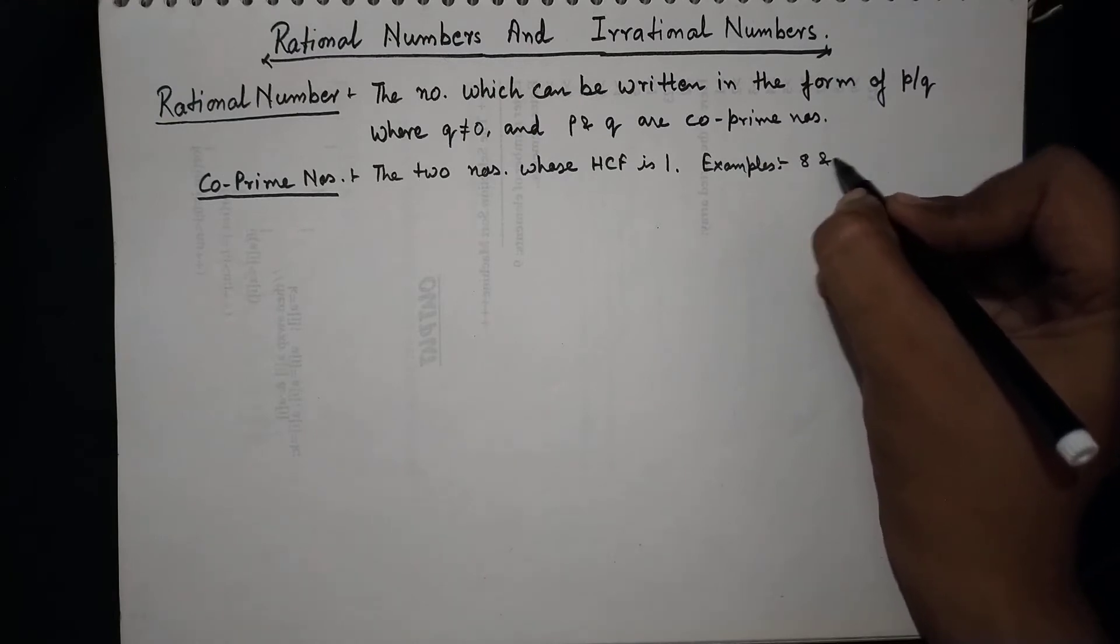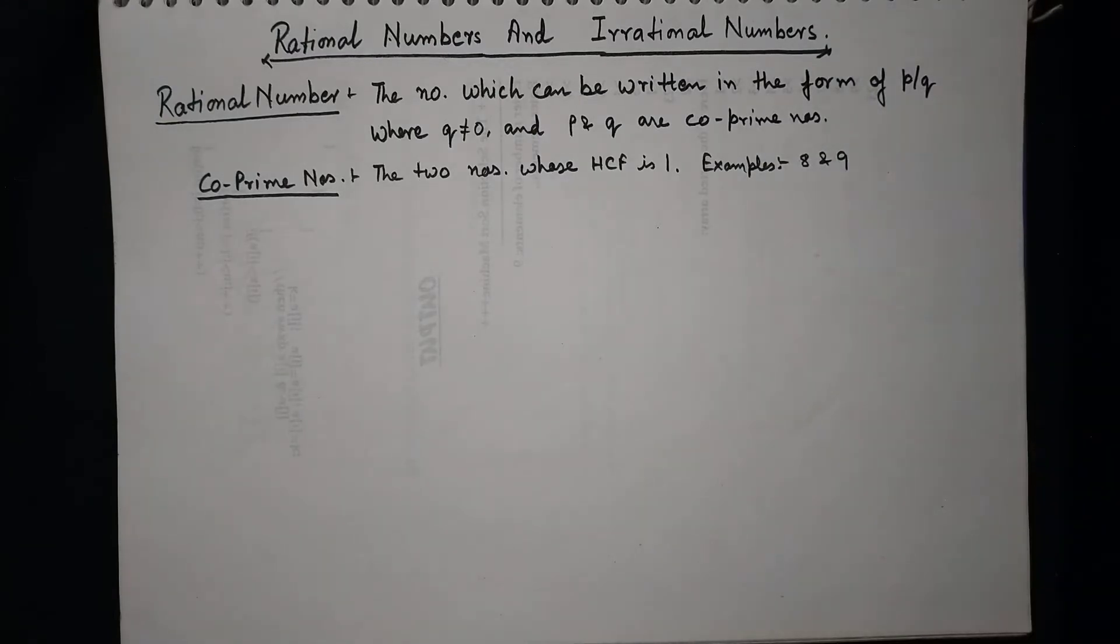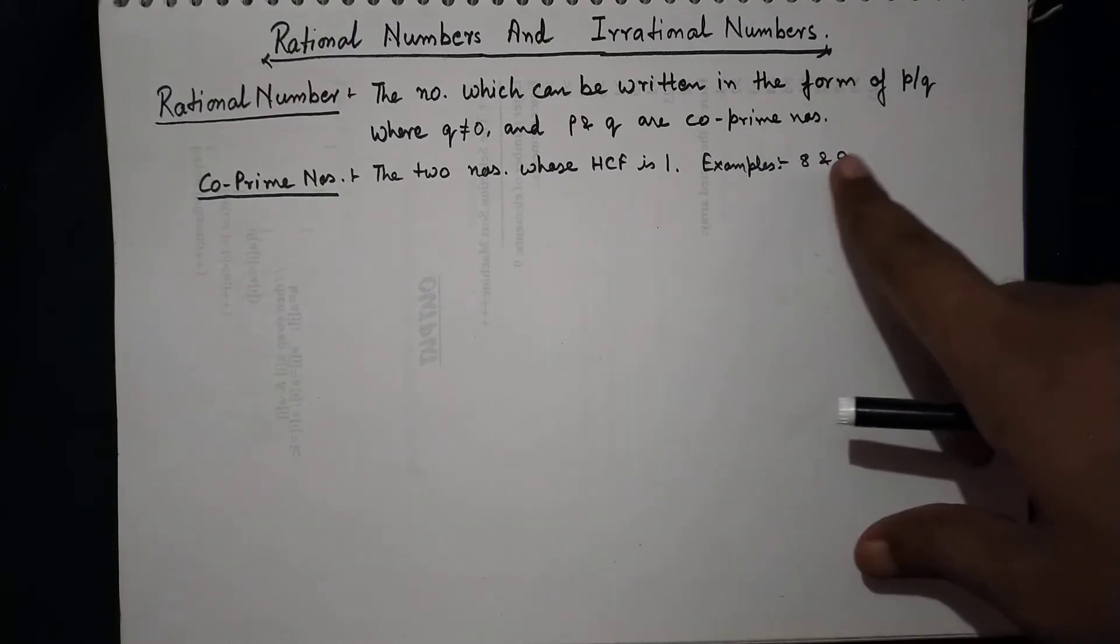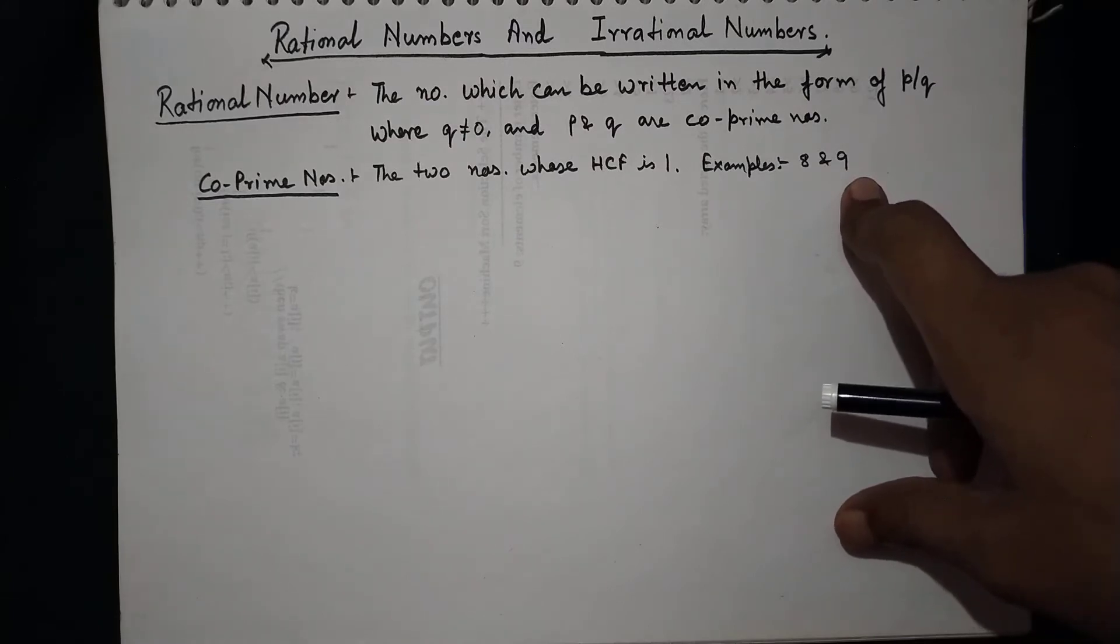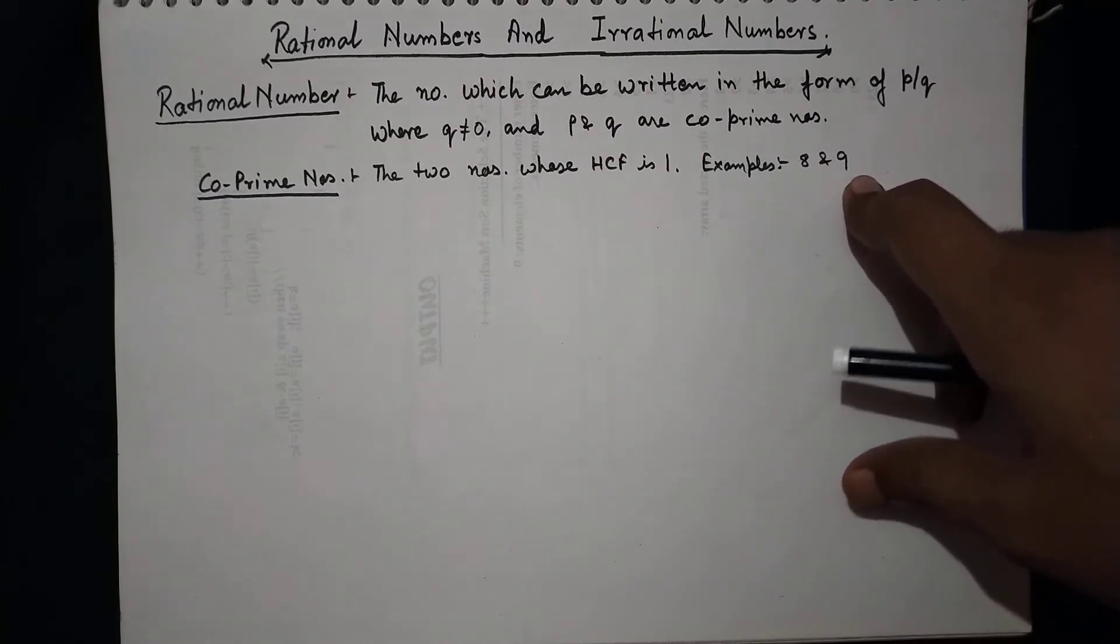8 and 9. Here, 8 and 9 both are composite numbers. This one is composite and this one is composite, but together 8 and 9 both are co-prime numbers.